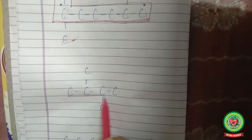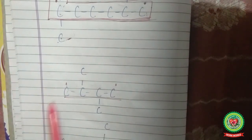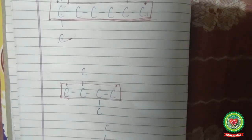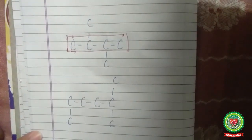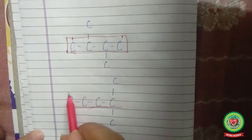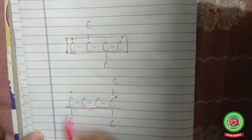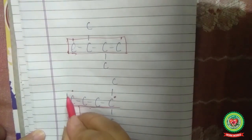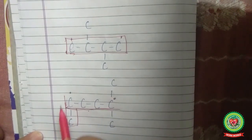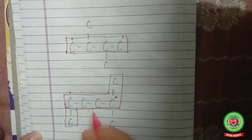In the next structure, this will be my basic chain — this is my first carbon and this is my last carbon. There is no carbon attached to the first or last carbon, so the chain remains straight. In another structure, a carbon is attached to the first carbon so it becomes part of the chain, and two carbons are attached to the last carbon, so only one of them is considered part of the chain.